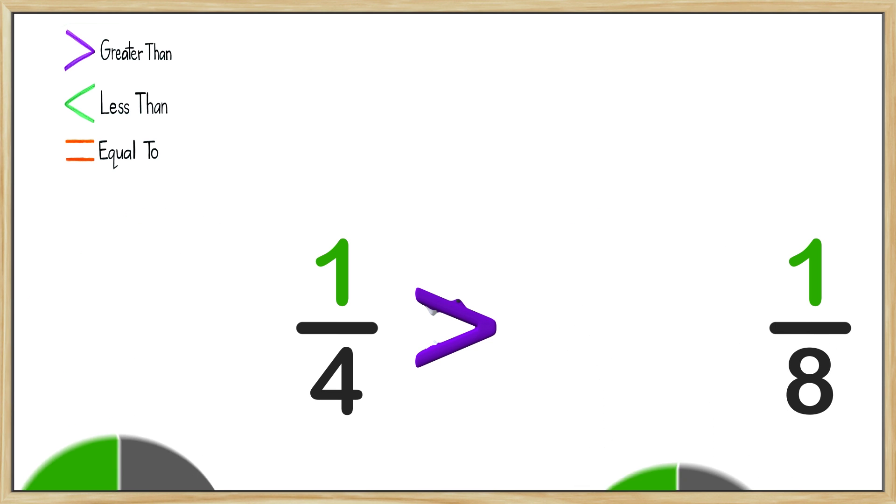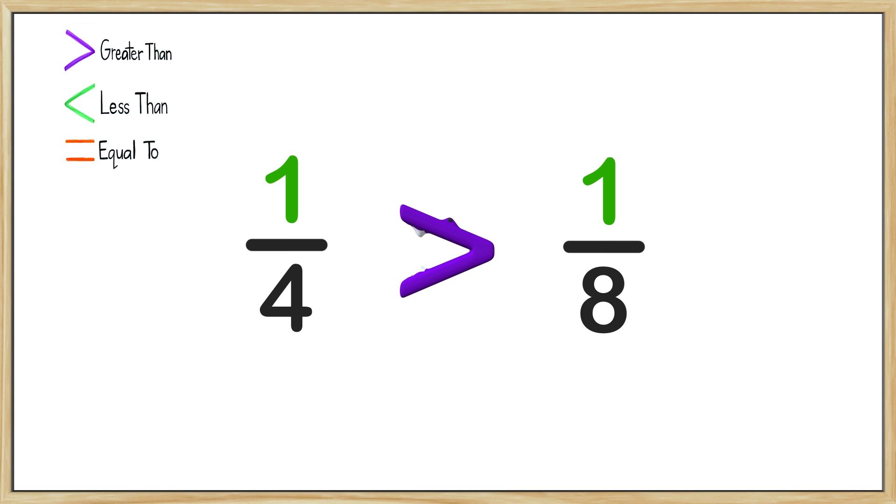Another way we can look at this is by looking at the denominators and numerators. The denominators are not the same in this problem. We have four on the left and eight on the right. The numerators however are the same number. If the denominators are different but the numerators are the same, the bigger fraction will be the one with the smaller denominator.